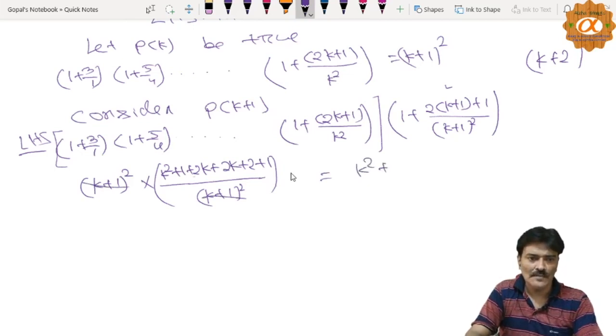k² plus 2k plus 2k is 4k. Now this 2 plus 1 is 3, and there is 1 here, 4.